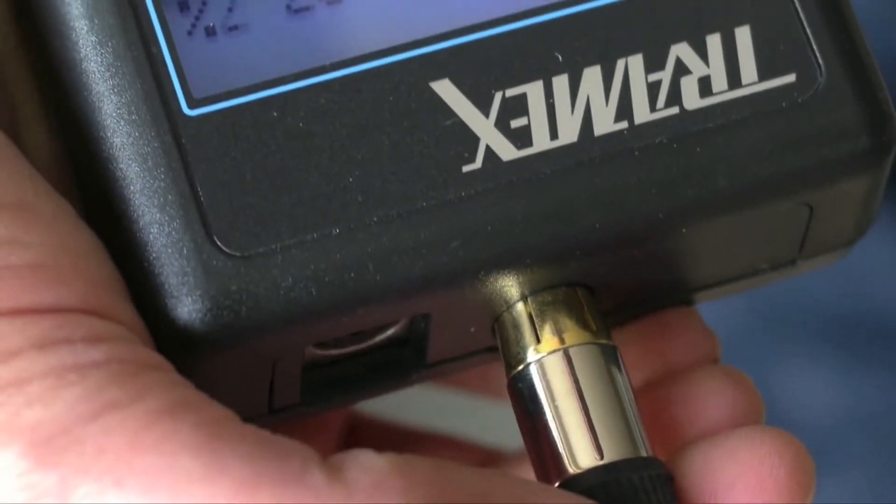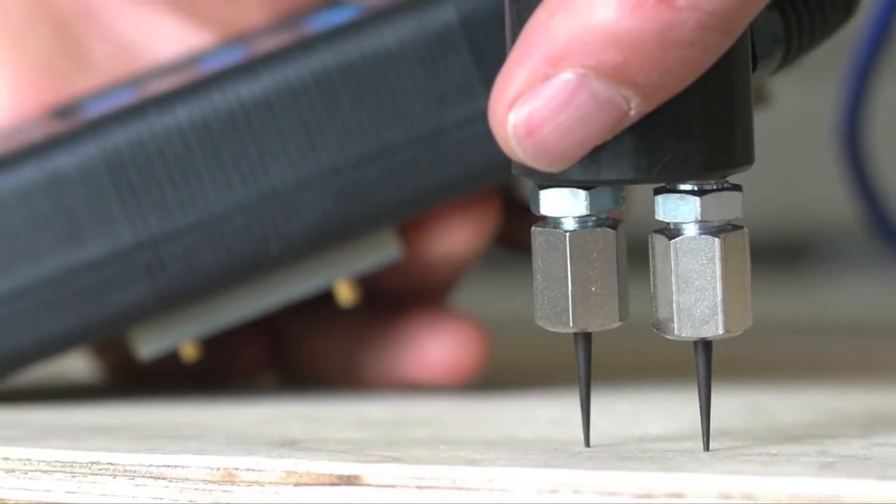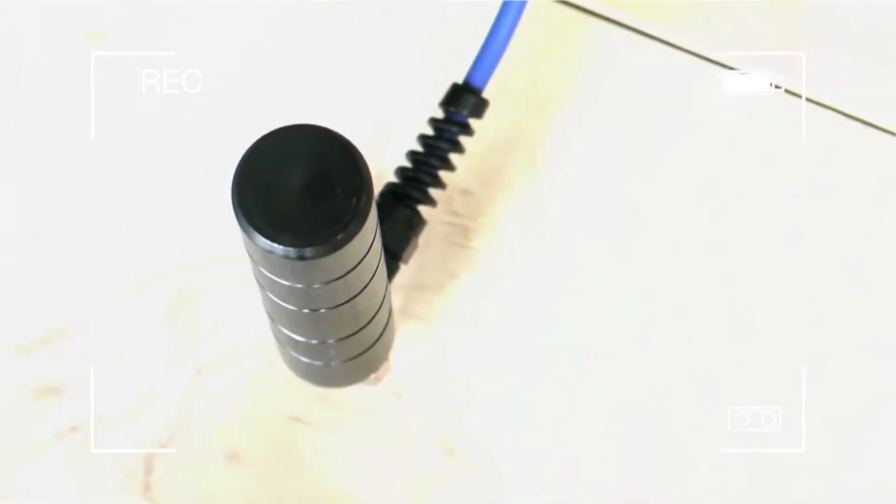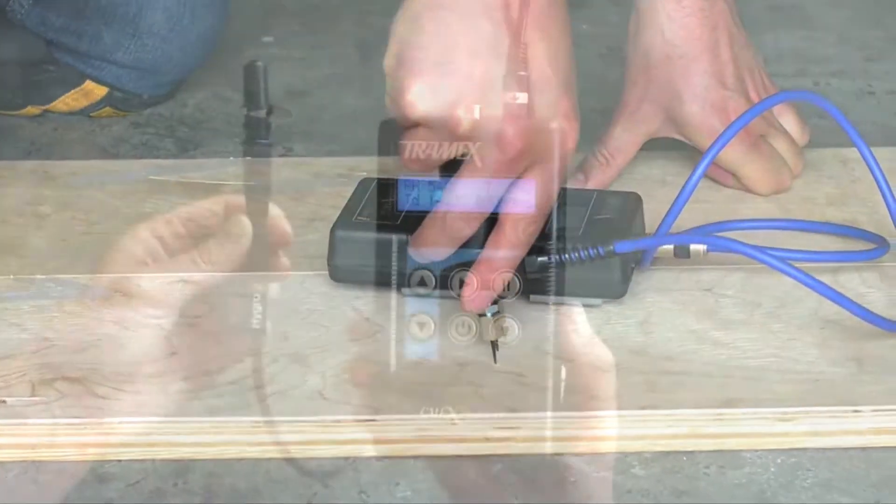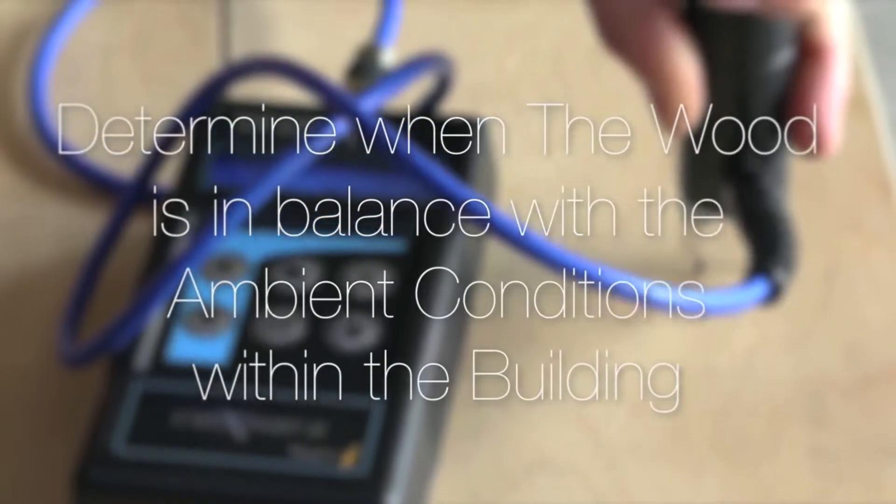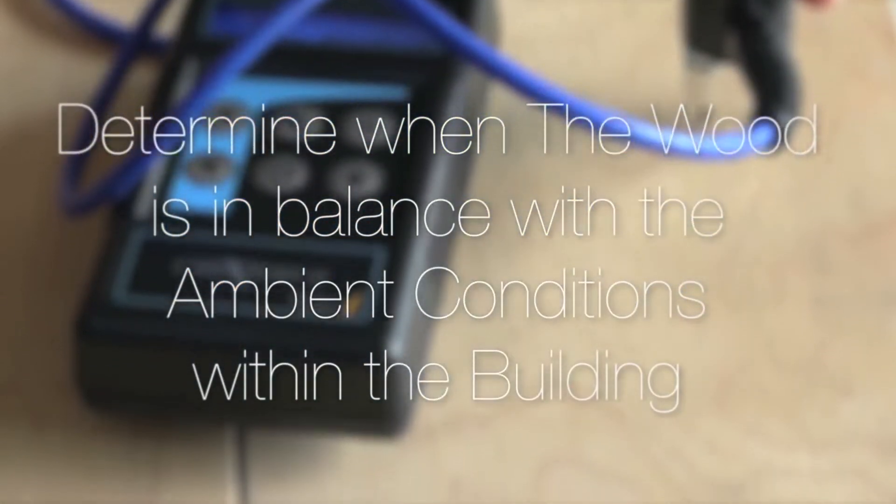The CMEx can also be used with the handheld pin probe for measuring moisture in wood. This is especially useful when installing wood floor coverings. By comparing the moisture content of wood with the ambient relative humidity conditions, we can determine when the wood is in balance with the ambient conditions within the building.